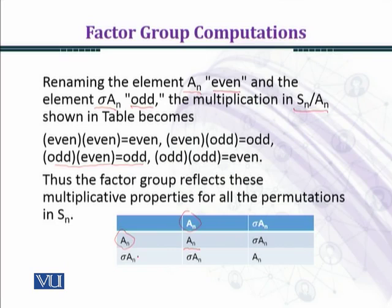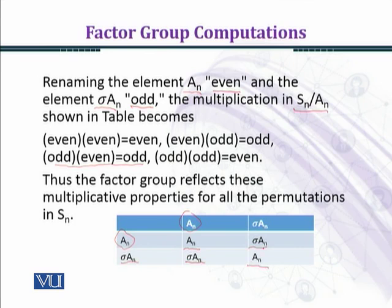A_n means i·A_n where i is the identity permutation. When you permute i with sigma you get sigma. So when we multiply i·A_n by sigma·A_n we obtain sigma·A_n, and when we multiply sigma·A_n by A_n we obtain sigma·A_n.